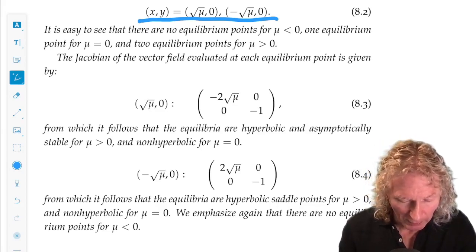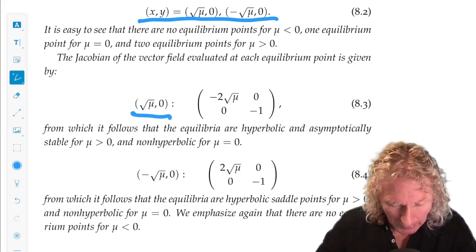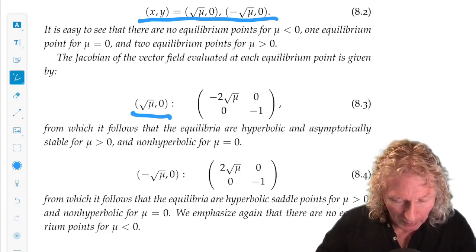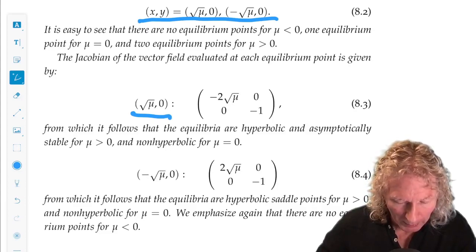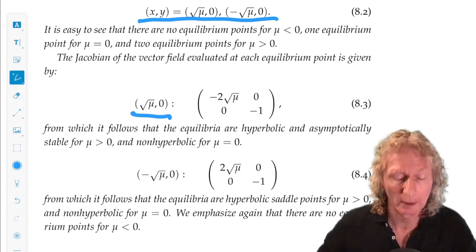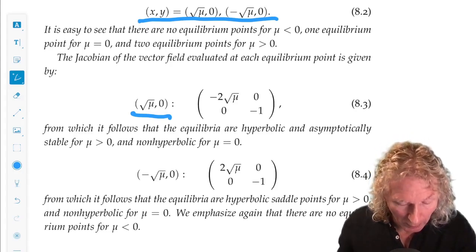And we see that this equilibrium point is a hyperbolic saddle point for mu greater than zero.